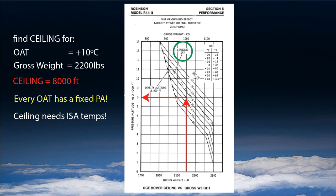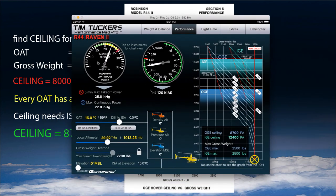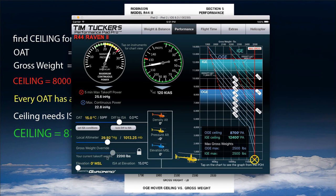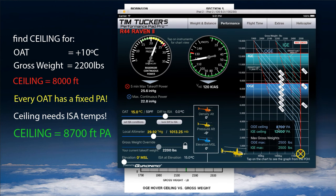So if we ask: what's the ceiling for 2,200 pounds at ISA temperature? We go up from 2,200, hit the ISA line, and go left to find the ceiling of 8,700 feet pressure altitude. This is actually how the app does it — when you set ISA conditions and 2,200 pounds gross weight, the app computes 8,700 feet pressure altitude for the OGE ceiling.